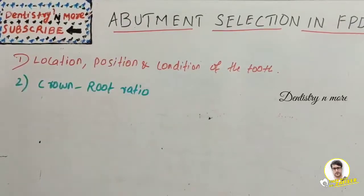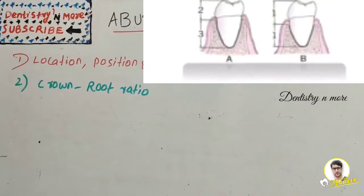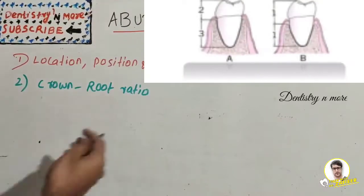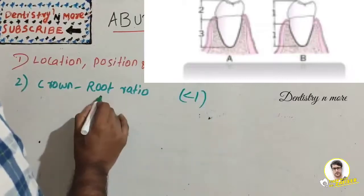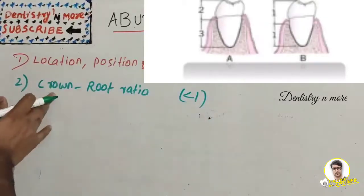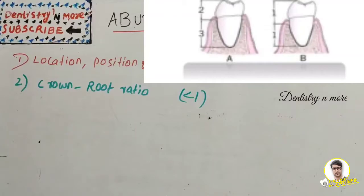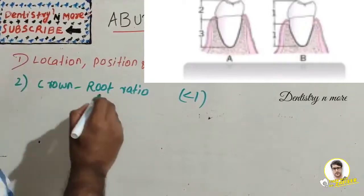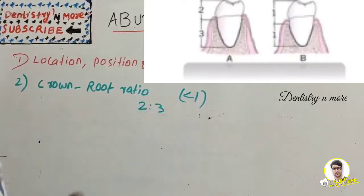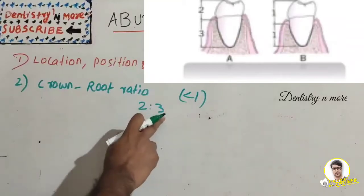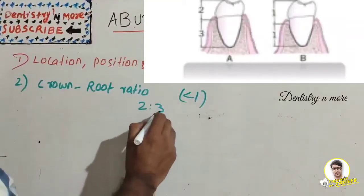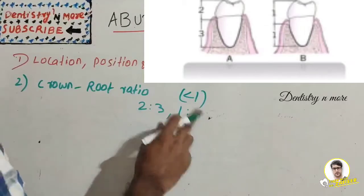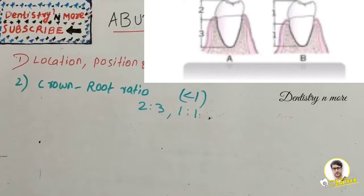The next factor is crown-root ratio. It is the ratio between the length of the crown and length of the root, and it should always be less than one. The length of the root should be greater than the length of the crown. The length of the crown indicates the length of tooth structure above the crest of the alveolar bone. Ideally, the crown-root ratio should be 2:3 - crown length 2, root length 3. But a ratio up to 1:1, equal length of crown and root, is acceptable.